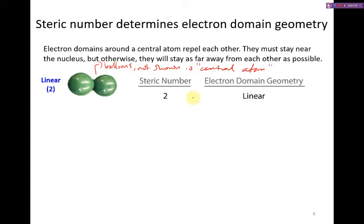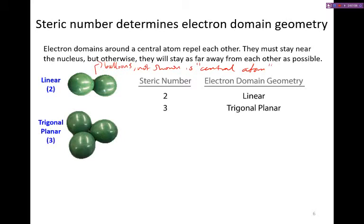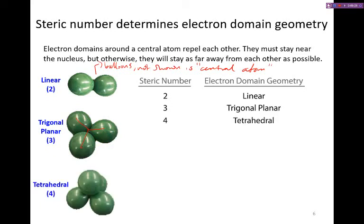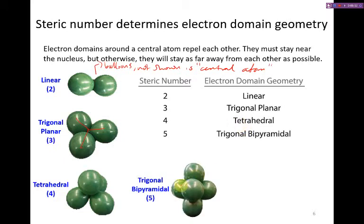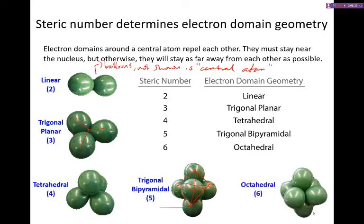With a steric number of two, or two electron domains, the geometry is linear. Three electron domains produce a trigonal planar electron domain geometry. Four domains give a tetrahedral geometry. Five domains produce a trigonal bipyramidal geometry — a trigonal base with two pyramids, hence the name. And six domains produce an octahedral electron domain geometry.